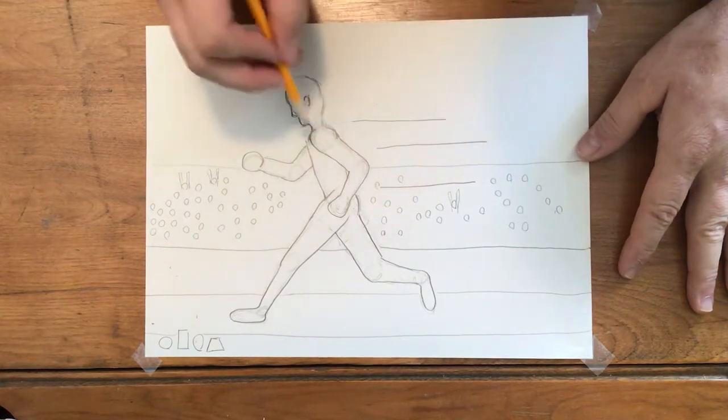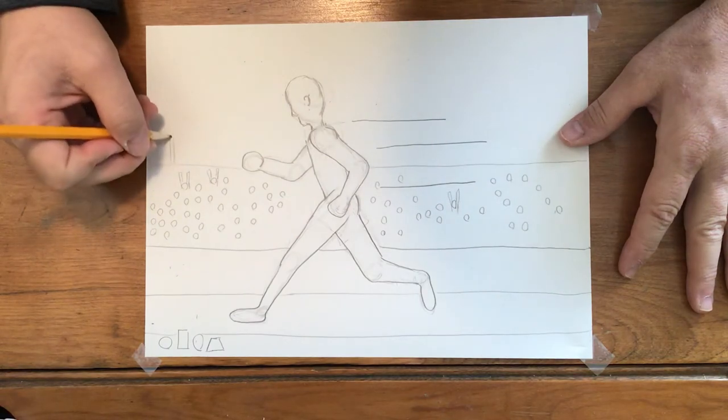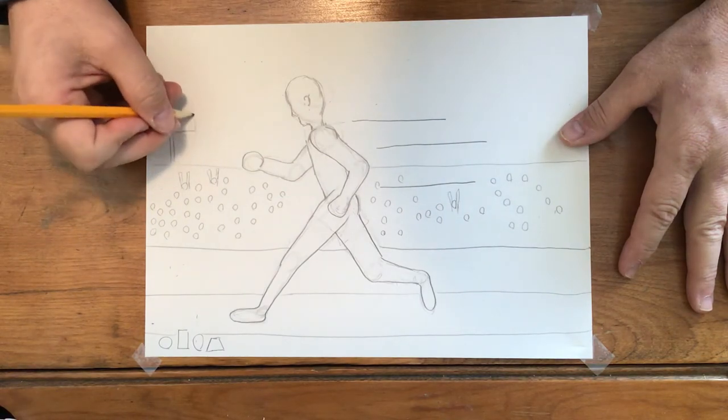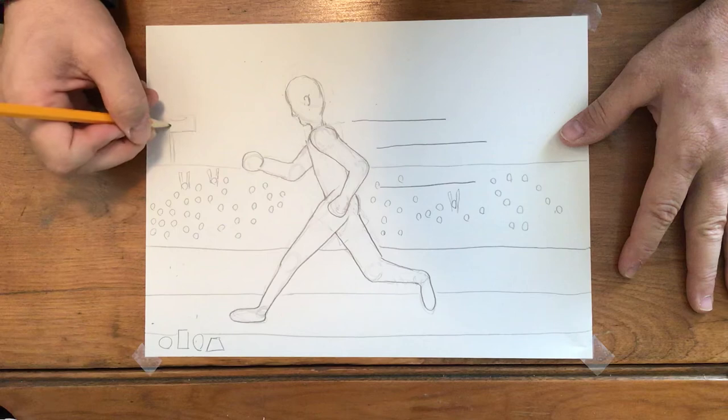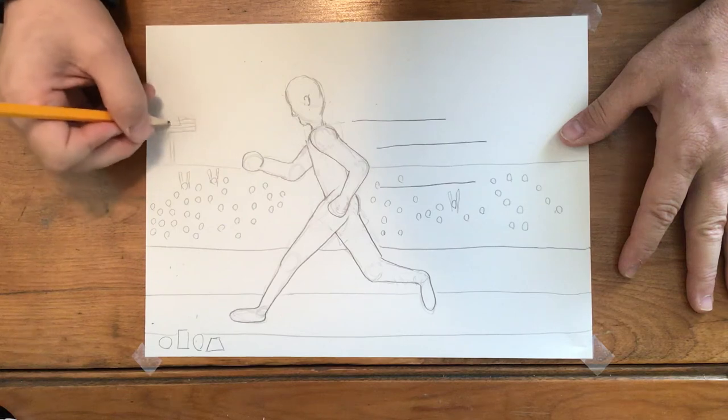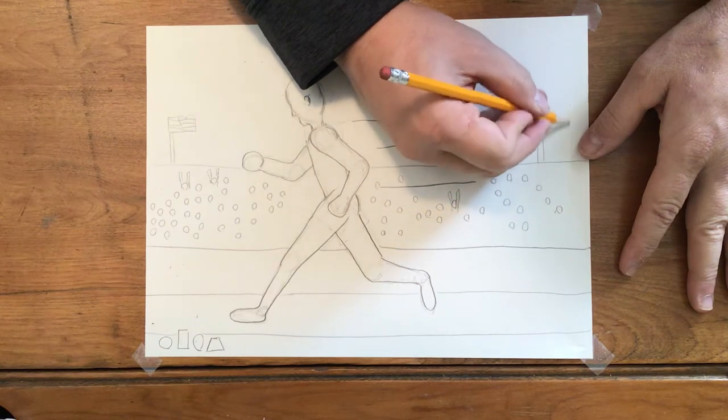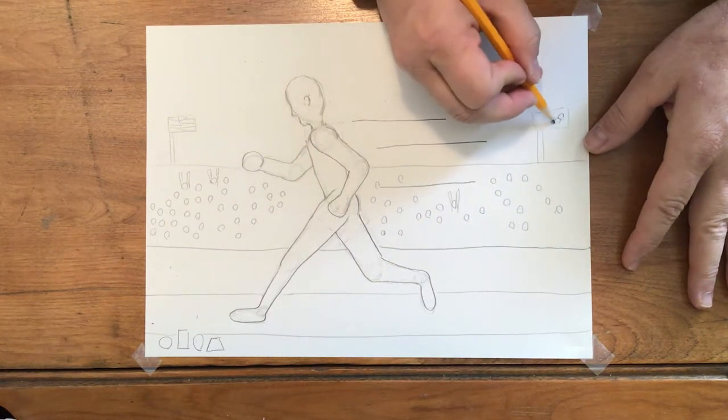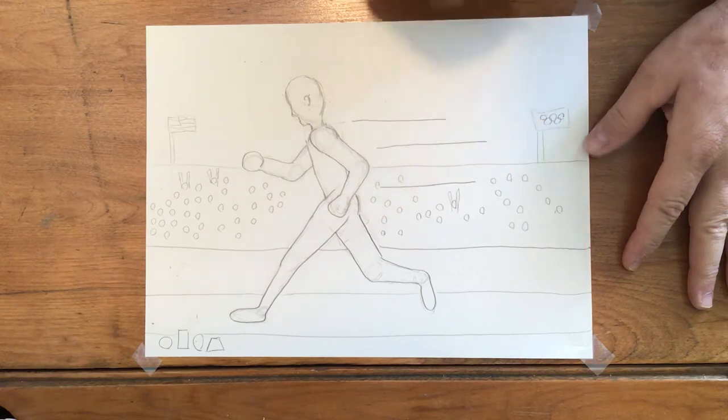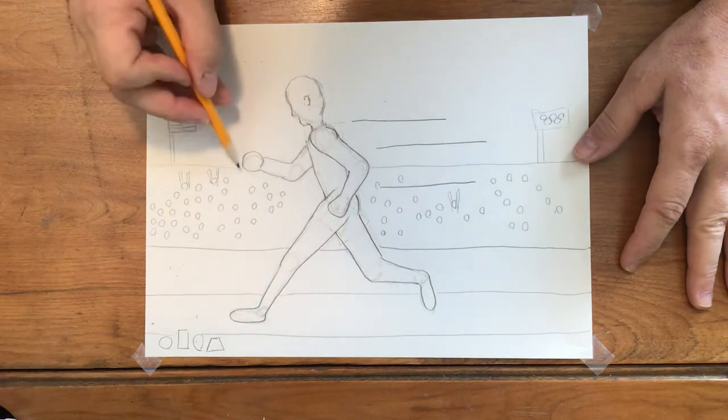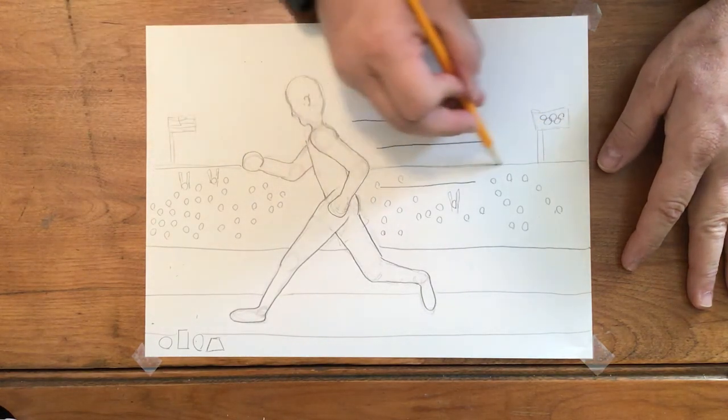Because it's the Olympics, maybe they have some flags flying. We'll make the United States and over here we'll just make an Olympic flag. I think there's five rings. All right, so we have filled up the space.